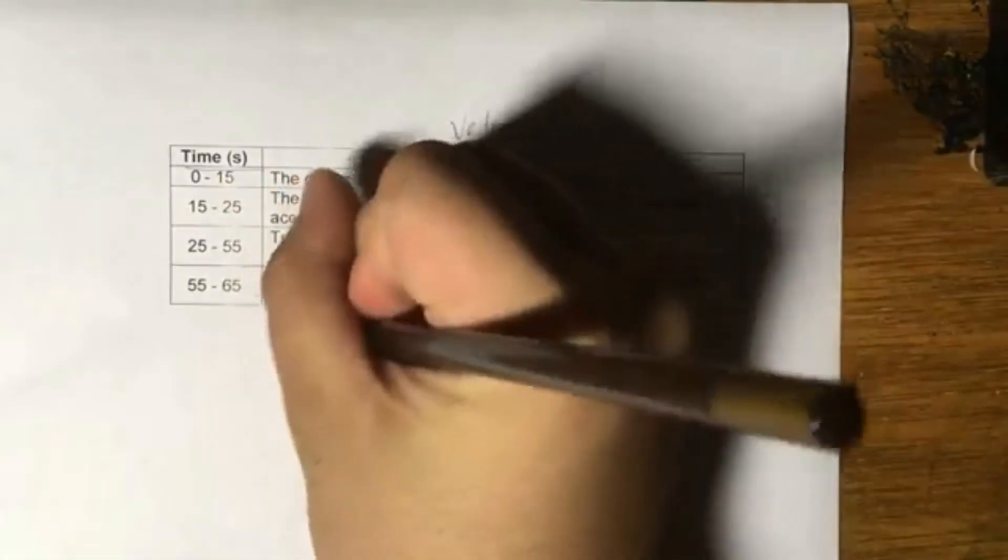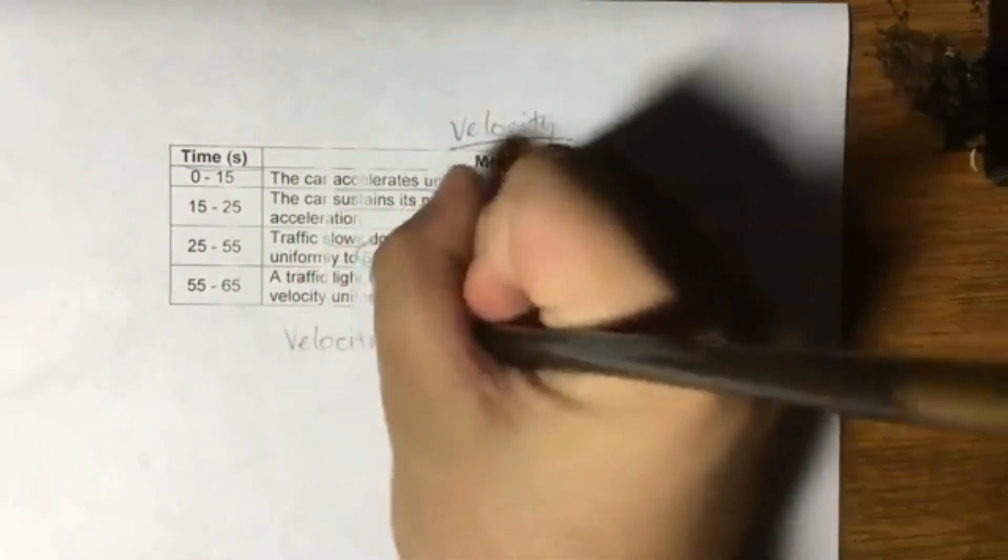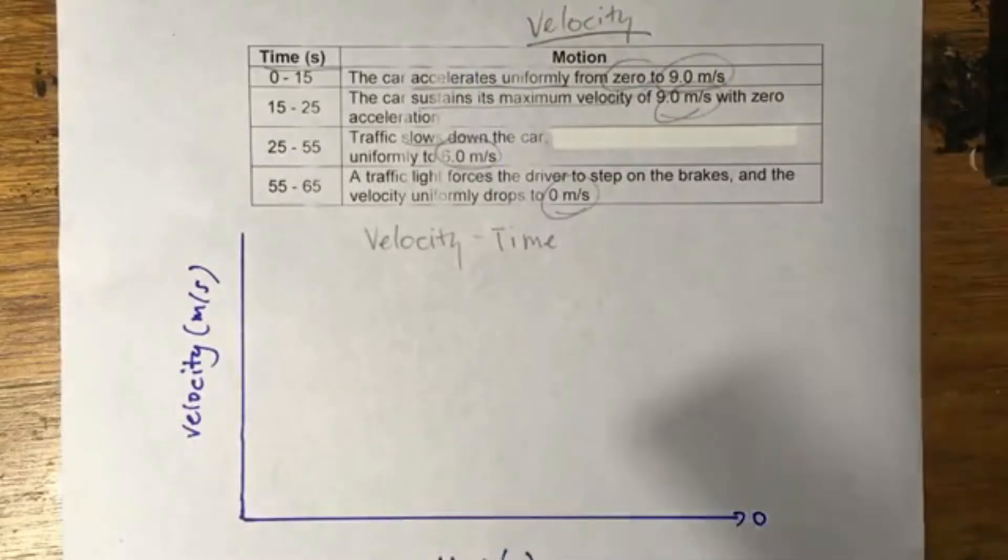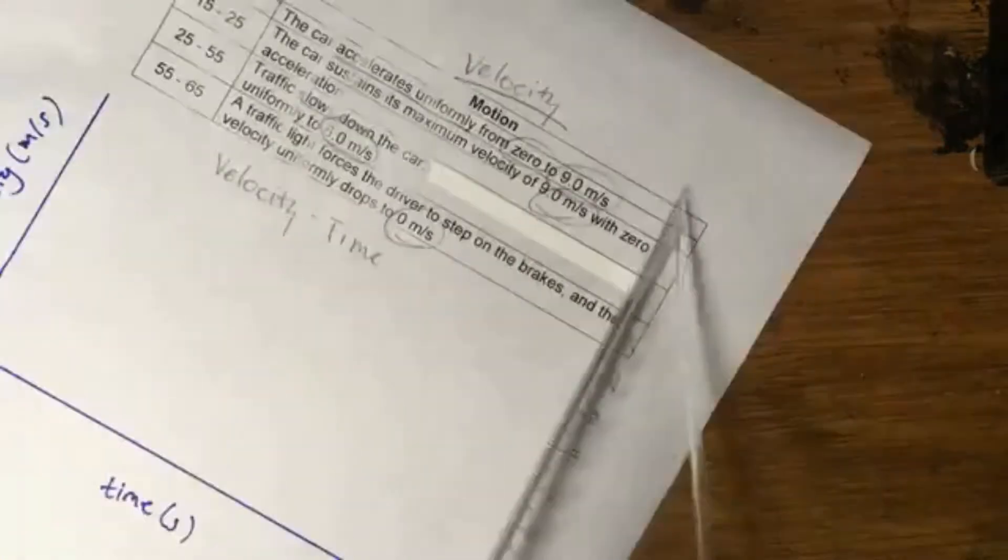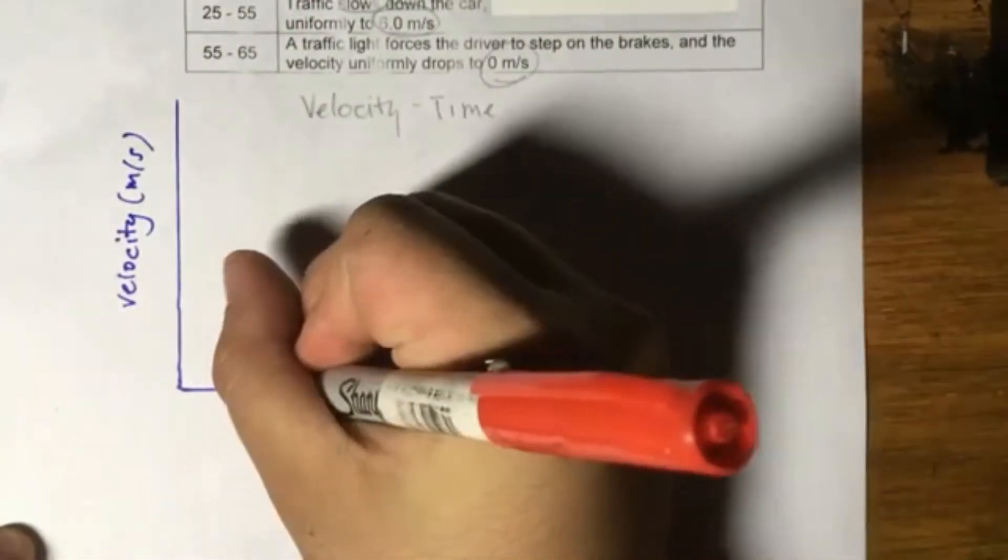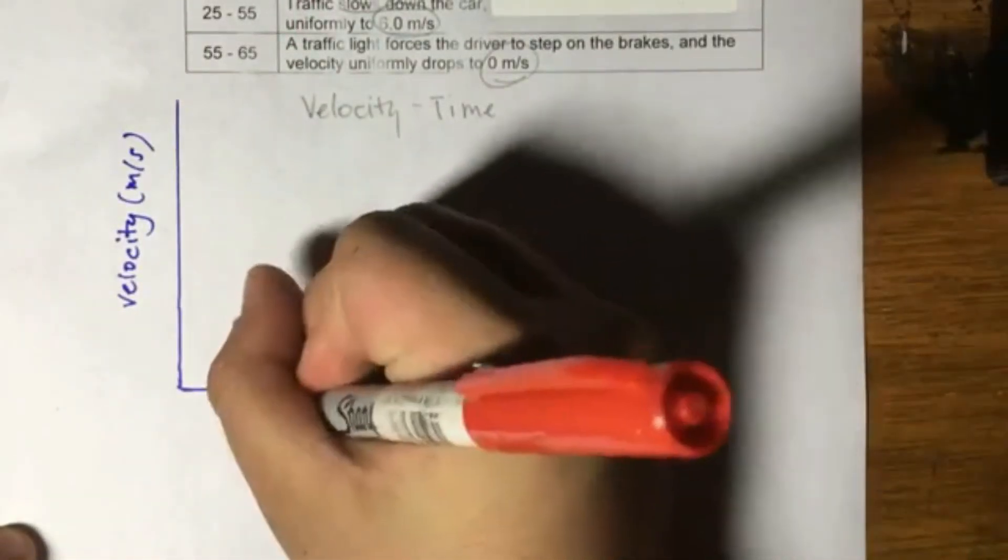So let's start with a velocity-time graph. We see here that there are 4 segments that we're going to have to analyze, and that's because there are 4 cases of motion on display here. So let me just make divisions in my graph. Zero to 15, so let's say 15 seconds, first 15 seconds.